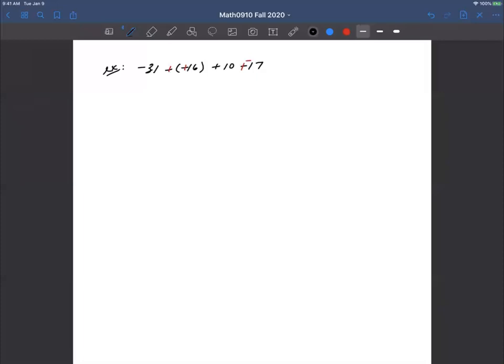in order two at a time, or I can reorder this and put all my negatives together and all my positives together. So just for argument's sake, I'm going to put my negatives together: -31 + (-17). Then my positives are +16 + 10.